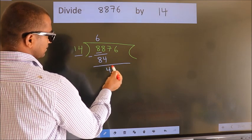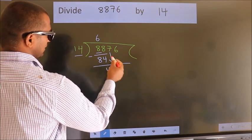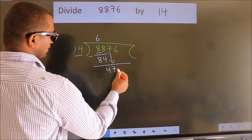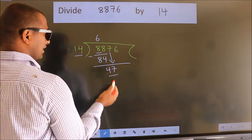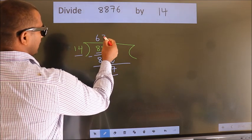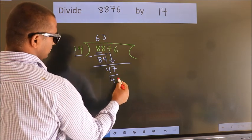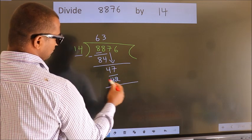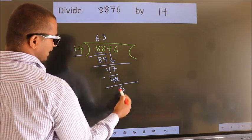After this, bring down the beside number, so 7 down. So 47. A number close to 47 in 14 table is 14 times 3 equals 42. Now we subtract. We get 5.